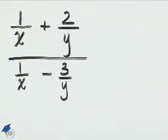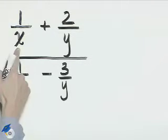We can simplify this complex fraction by multiplying the numerator and the denominator by the least common denominator of all these individual fractions.